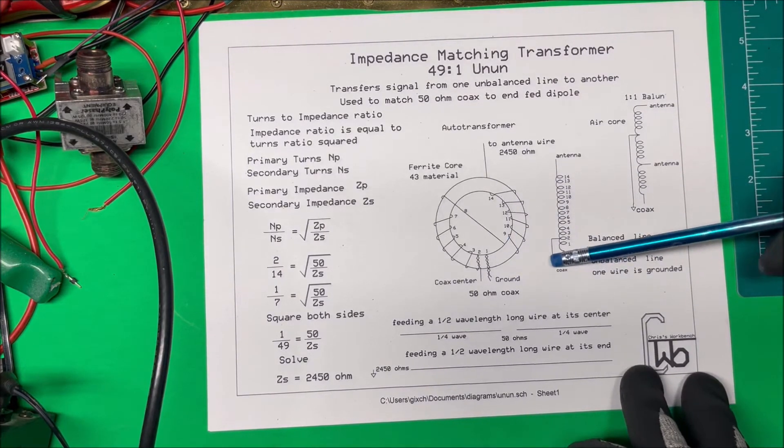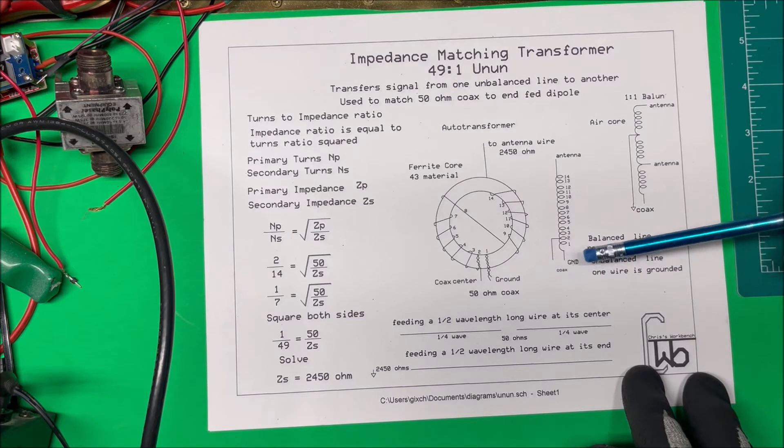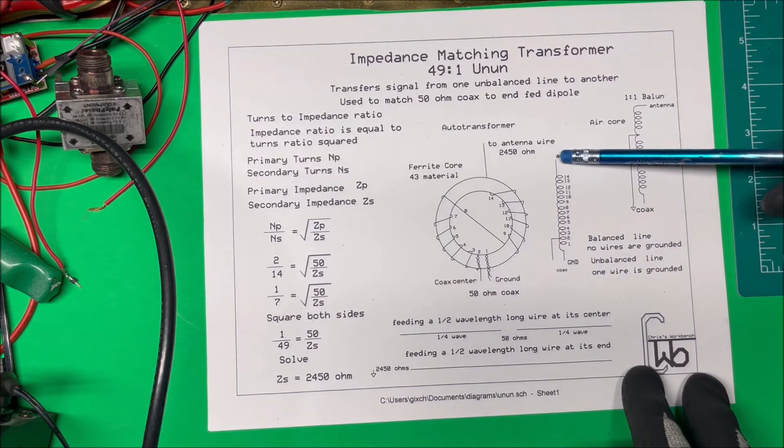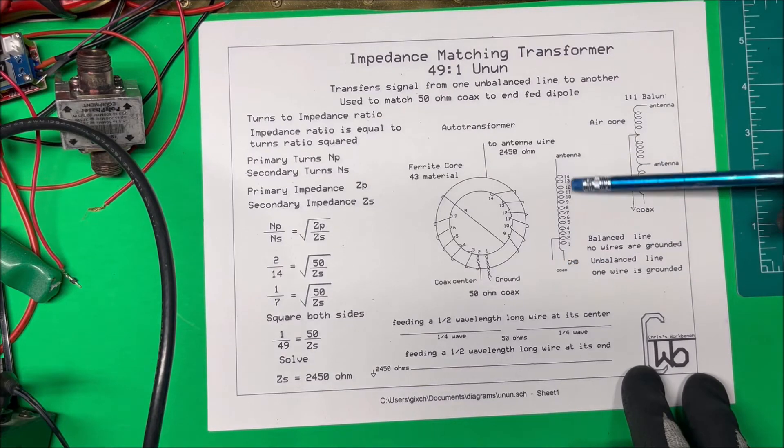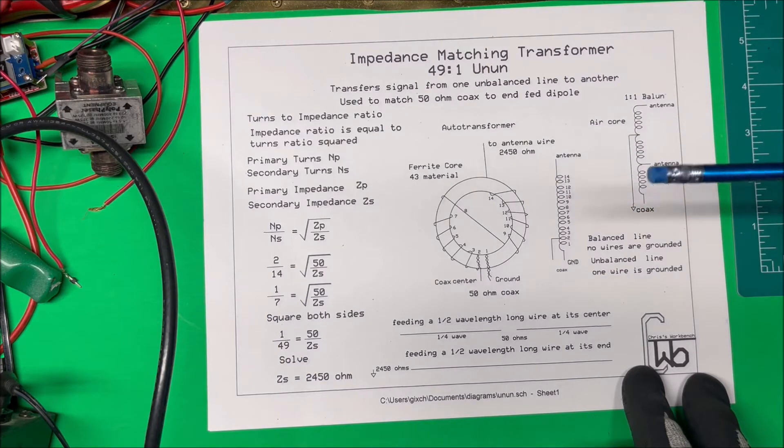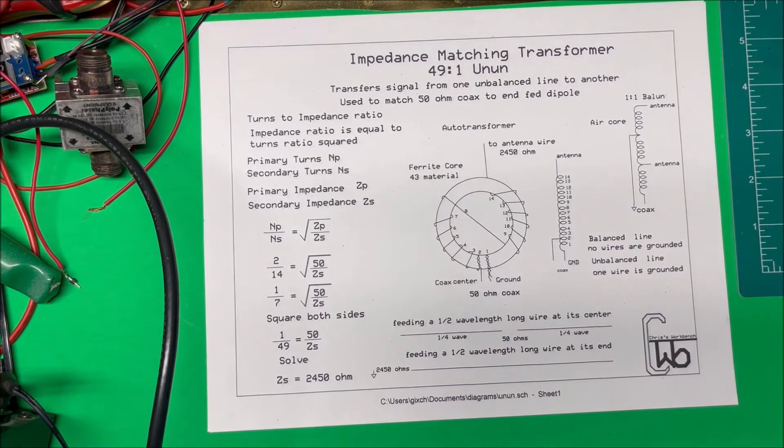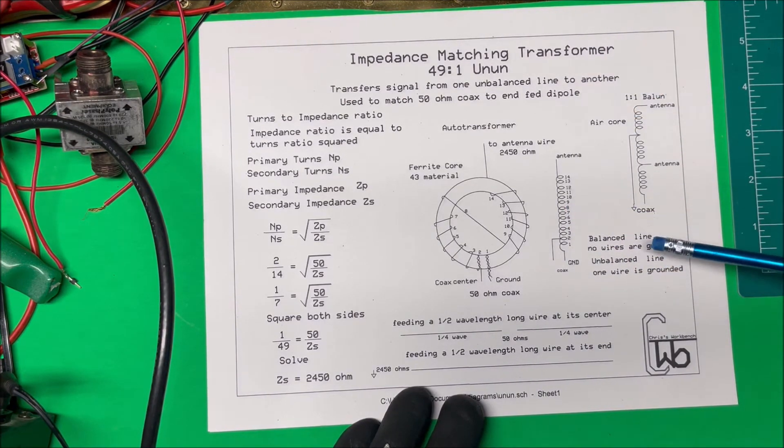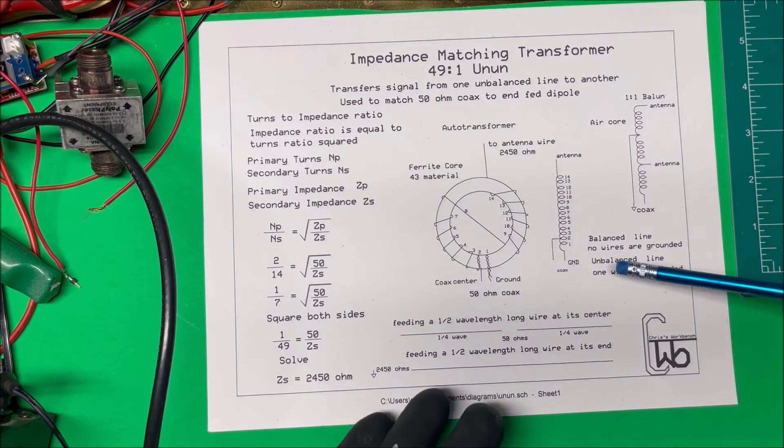In this case here the coax, of course, is going to be, the shield is going to be grounded, and this side of the antenna is actually grounded here too through the auto transformer, so they're both unbalanced. So if it's not grounded it's balanced, if it is grounded it's usually unbalanced. So that's how you determine the difference between a balanced line and unbalanced line.